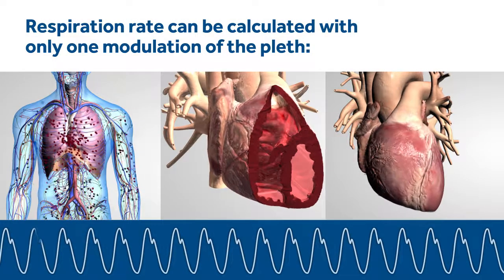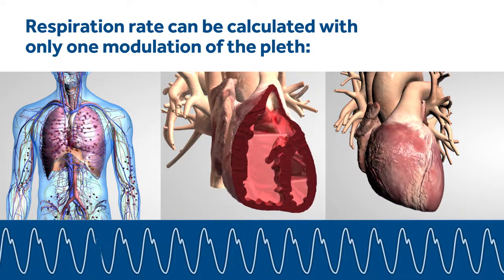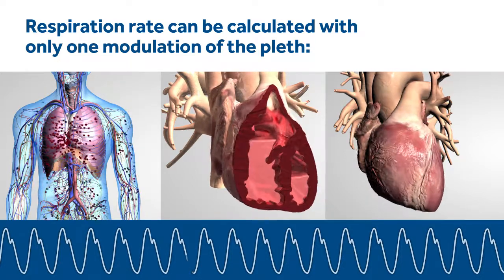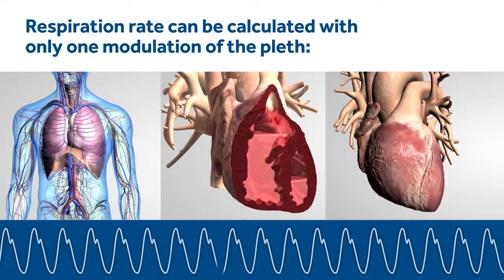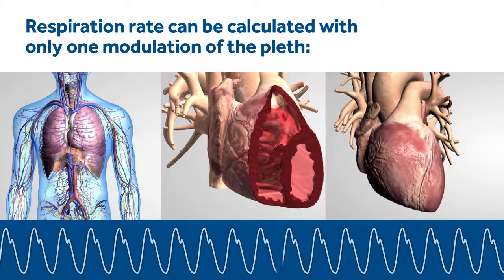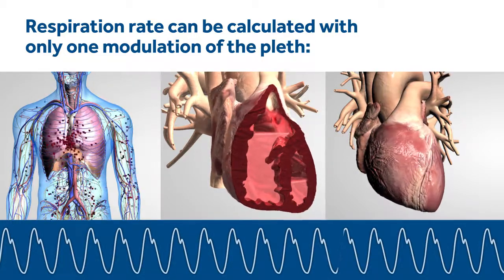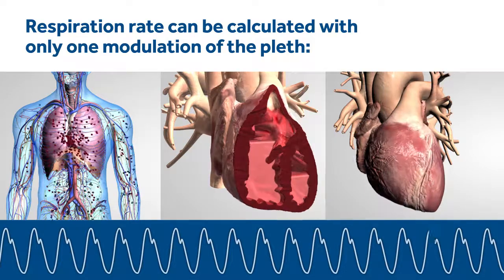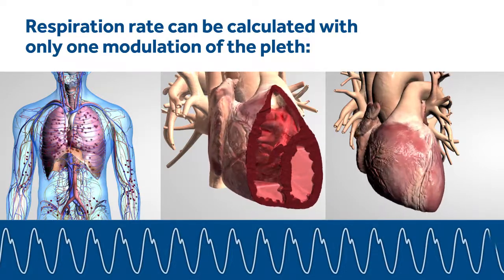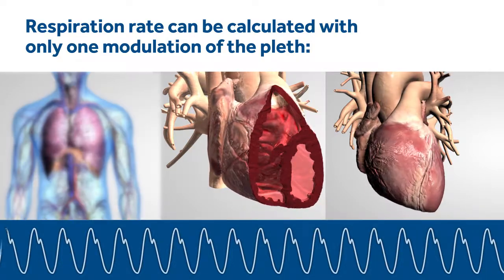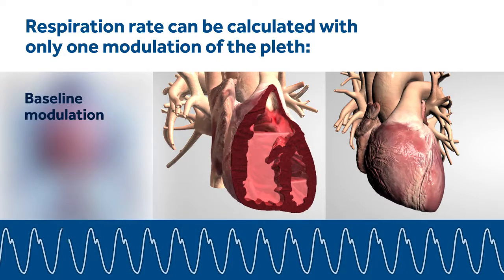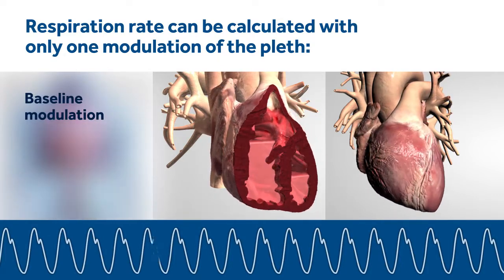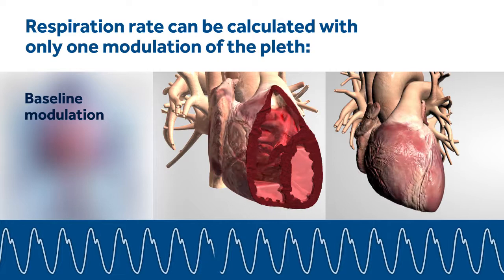The Nelcore respiration rate algorithm monitors modulations of the pleth waveform due to the respiratory cycle, including baseline, frequency and amplitude. Therefore, it can detect a change in respiration rate even if only one or two pleth modulations change. For example, if one patient demonstrates a change in pleth waveform baseline modulation, a respiration rate can be calculated based on that change.